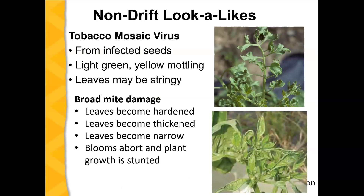A couple other non-drift lookalikes: tobacco mosaic virus generally comes in on infected seeds — not something we see very often, but it looks pretty strange and you might think it's herbicide damage. The picture on the bottom shows broad mite damage on peppers — notice the upward curling of the leaves, but these leaves will become hardened, thickened, and more narrow. You might also notice that blooms are aborting and overall plant growth is severely stunted.